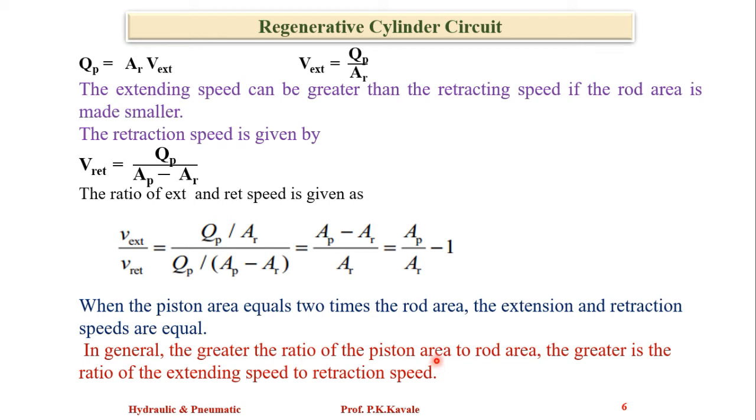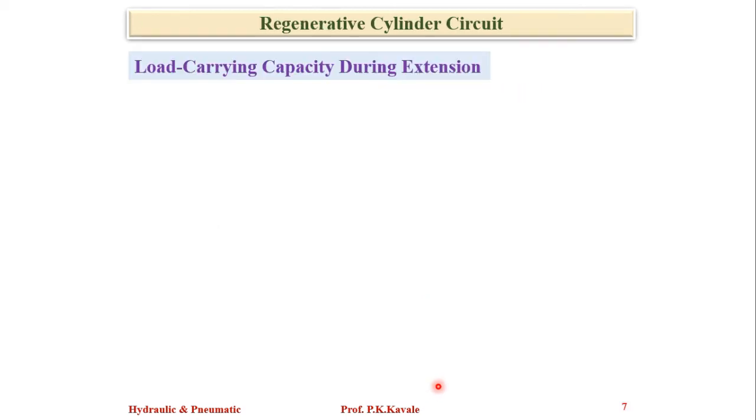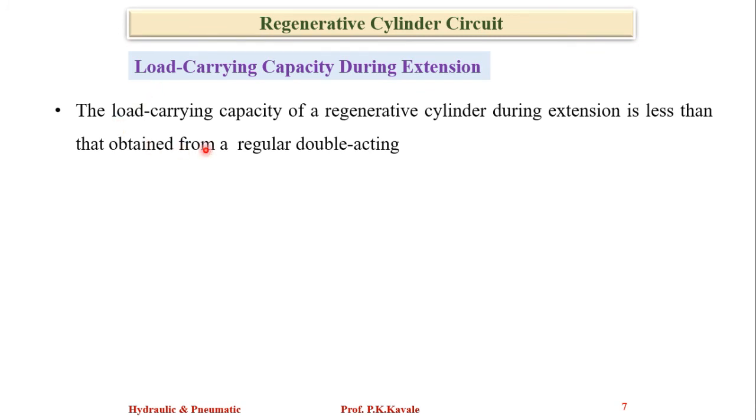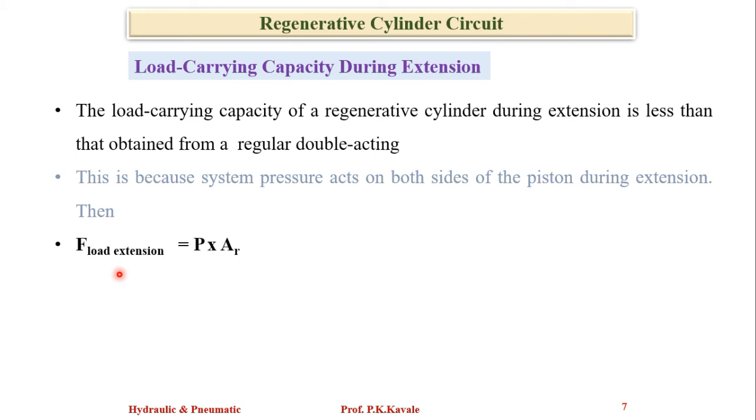In general, the greater the ratio of piston area to rod area, the greater is the ratio of extending speed to retraction speed. Now, what about load carrying capacity? The load carrying capacity of a regenerative cylinder during extension is less than that obtained from a regular double-acting cylinder. This is because system pressure acts on both sides of the piston during extension.